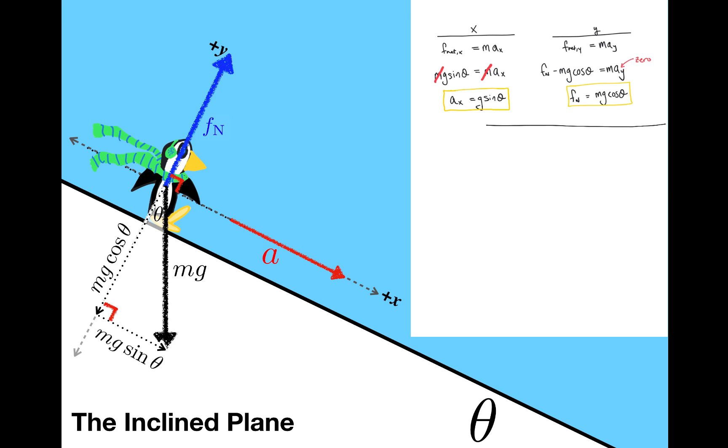One of the things I like to do when I arrive at a result like this one is to think of some extreme points to see if my answer makes any sense. For example, let's think about what happens when theta is equal to 0. Well, then the penguin will just be sitting on a horizontal surface. And ax will be equal to g sine 0, and since sine 0 is equal to 0, ax is equal to 0. Also, fn will be equal to mg cosine 0, and since cosine 0 is 1, fn is equal to mg. And it seems pretty reasonable that if the penguin is sitting on a horizontal surface, its acceleration would be 0, and the normal force would be equal to mg.